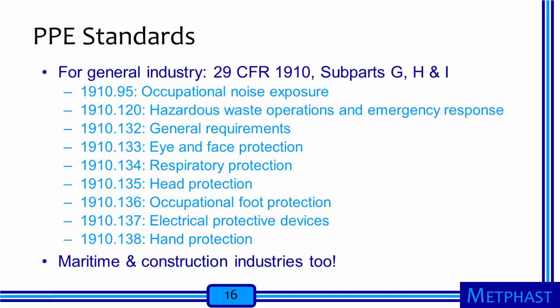There are a variety of standards relevant to personal protective equipment. In Title 29 of the Code of Federal Regulations, Part 1910, Subparts G, H, and I, there are sections that apply specifically to PPE. These include Section 95 for Occupational Noise Exposure, Section 120 for Hazardous Waste Operations and Emergency Response, and Sections 132–138 covering general PPE requirements, eye and face protection, respiratory protection, head protection, foot protection, protection from electrical exposures, and hand protection. There are separate PPE standards for the maritime and construction industries as well. We will focus on the general industry standards as those are where PPE relevant to nanomaterials will be covered in most situations.